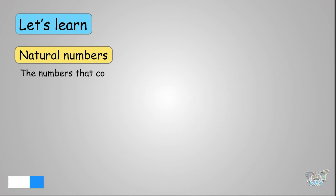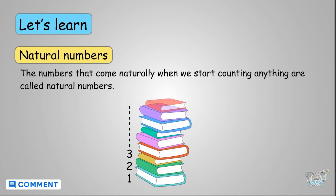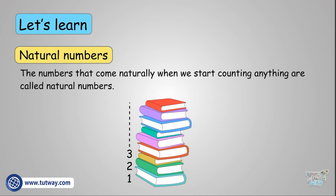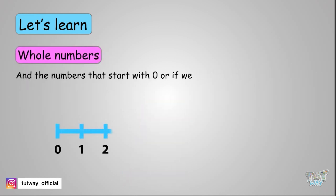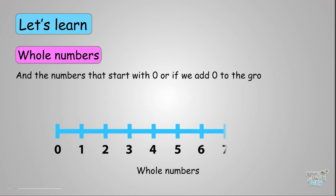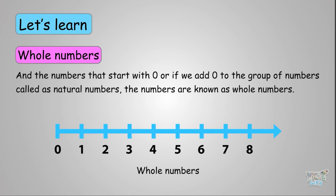The numbers that come naturally when we start counting anything — for example 1, 2, 3, and so on — are called natural numbers. Natural numbers start from 1. And the numbers that start with 0, or if we add 0 to the group of natural numbers, those numbers are known as whole numbers.